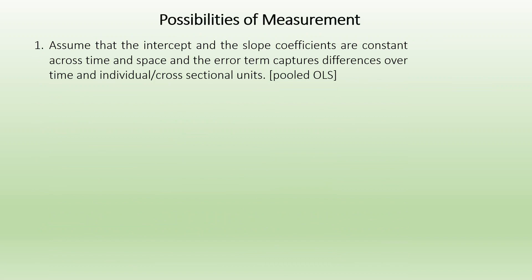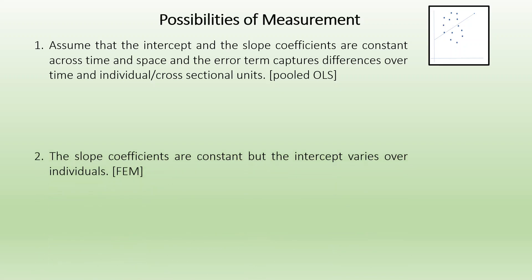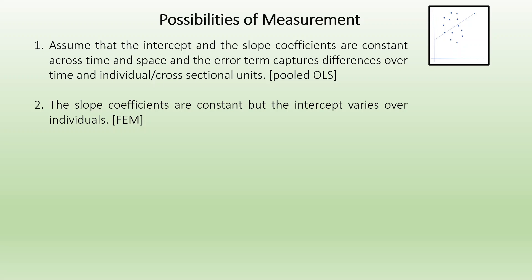So what are the possibilities of measurement? First, assume that the intercept and the slope coefficients are constant across time and space, and the error term captures differences over time and individual cross section units. This is known as pooled OLS. This particular type of regression has already been discussed in my previous videos — kindly refer to my playlist. The second case is where the slope coefficients are constant but the intercept varies over the individuals, and it is known as the cross section effect.